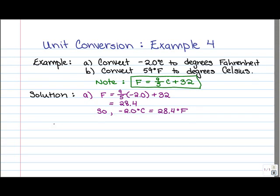So we've finished Part A. Now for Part B, we start with the fact that F equals 9 fifths C plus 32. We know that F is 59, and so what that means is that 59 is equal to 9 fifths C plus 32. We need to find C.